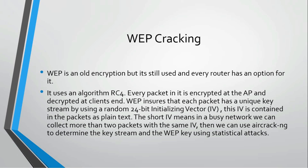That unique key is a 24-bit initialization vector (IV), which you can think of as a random number. A random 24-bit number is sent with each and every packet, and that IV is sent in plain text — it is not encrypted by any algorithm like RC4. So each packet contains some data along with a random number attached to it in plain text, which we can read easily.